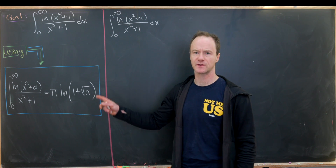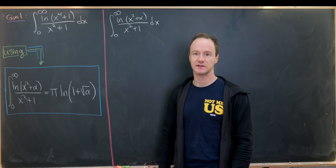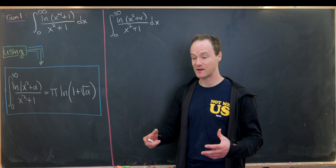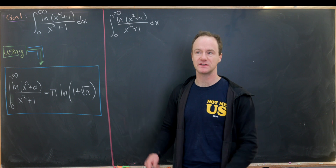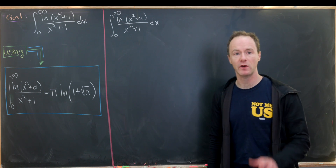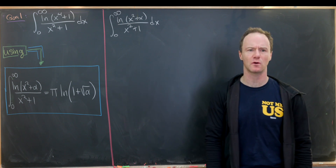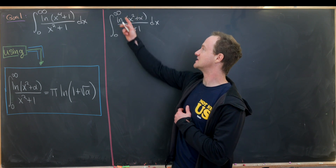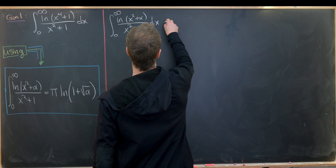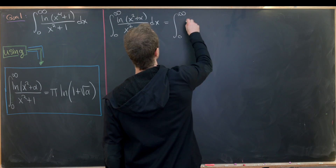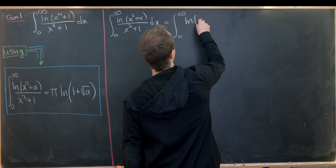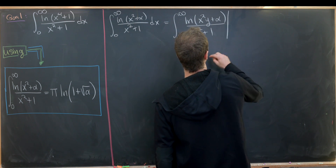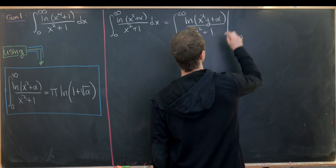This only holds for certain values of α in the complex numbers — it depends on the real part of α. Let's jump into proving or deriving this identity. I'm going to start by changing this single integral into a double integral. I'll recognize the integrand as the natural log of (x²·y + α) over (x² + 1), evaluated between zero and one.